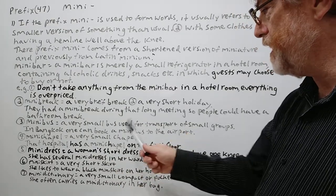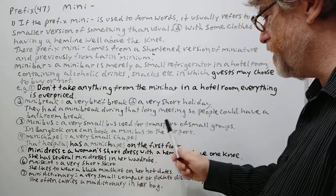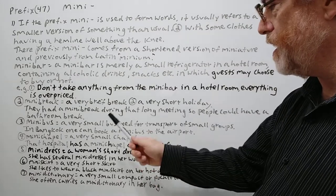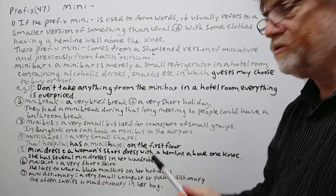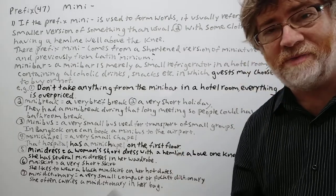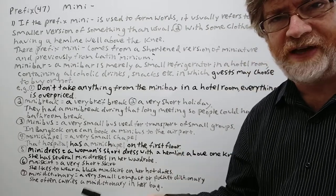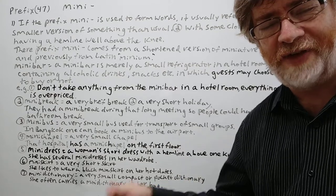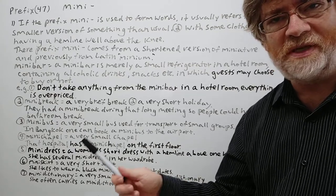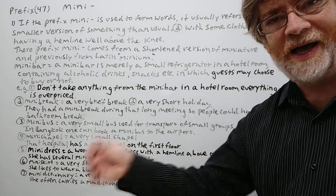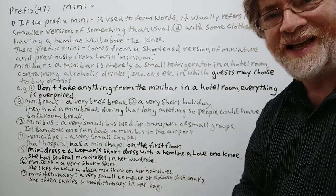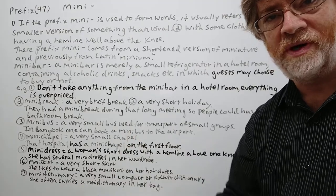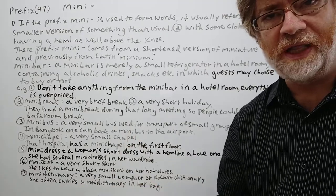Mini bus — a very small bus used for transport of small groups. Example: In Bangkok, one can book a mini bus to the airport. A lot of times it's just like a fancy van that can fit maybe 10 or 15 people, and they call it a mini bus — it's a lot cheaper than other transport and can get you to the airport quickly if you book it.